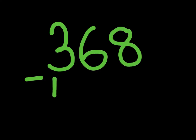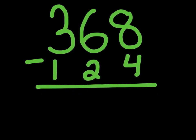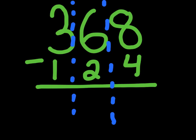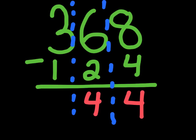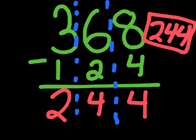Let's try 368 minus 124. We break this up into right, middle, and left hand columns. First, the right hand column: eight minus four is four. Then the middle column: six minus two is four. Then the left hand column: three minus one is two. So our answer to 368 minus 124 is 244. Awesome — let's go on to a harder type of problem.